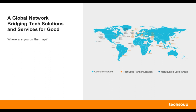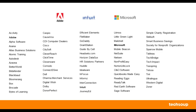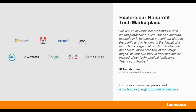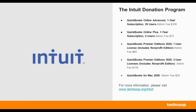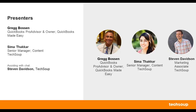Just a little bit about TechSoup. We are located in 236 countries and territories. We serve over 1.1 million nonprofits around the world, offering donated or discounted technologies. If you're interested in finding out if your organization is eligible, please go to TechSoup.org/get-product-donations. Today we are focused on QuickBooks and we do have an Intuit donation program. For more information, please visit TechSoup.org/Intuit.